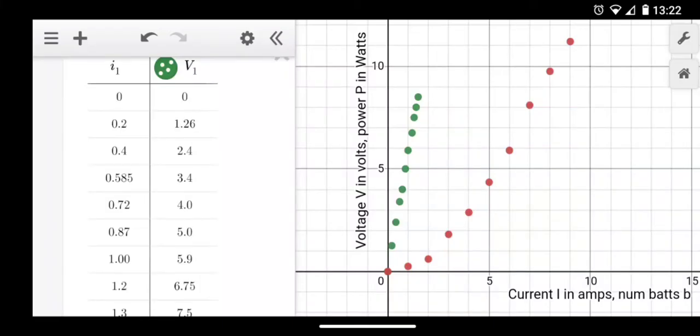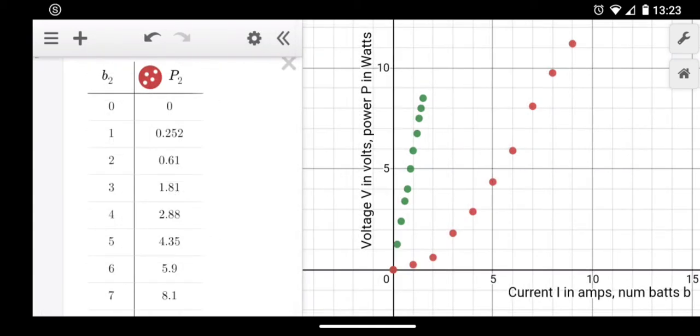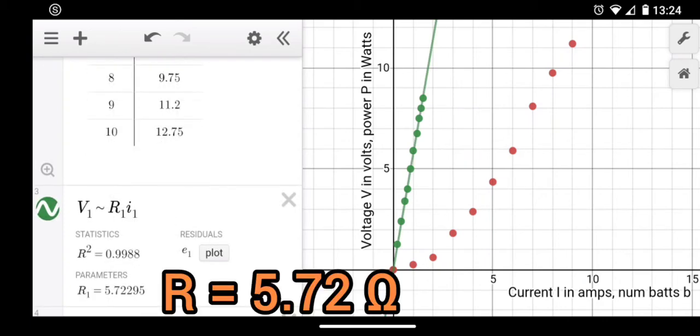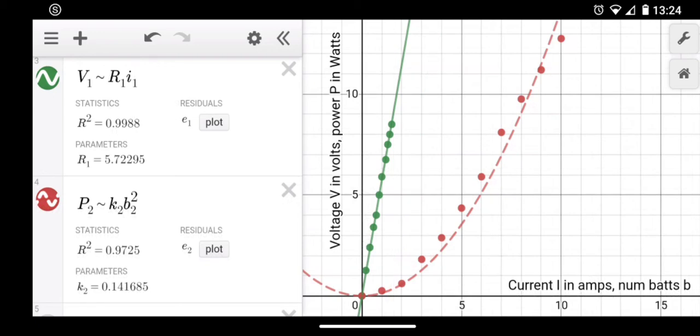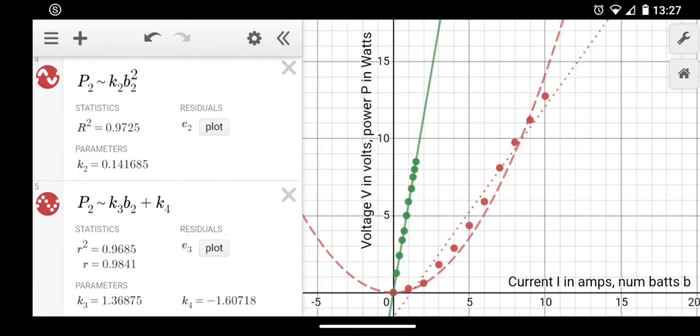Here's the first table of current I. I is the variable for current. V, capital V, is voltage. Here's the number of batteries. B2 is the number of batteries. P2 is the watts, the power, which is simply the current times the voltage. And you can see that V equals RI, Ohm's law, produces a straight line with a slope of about 5.72, very close to the 6 in the box.